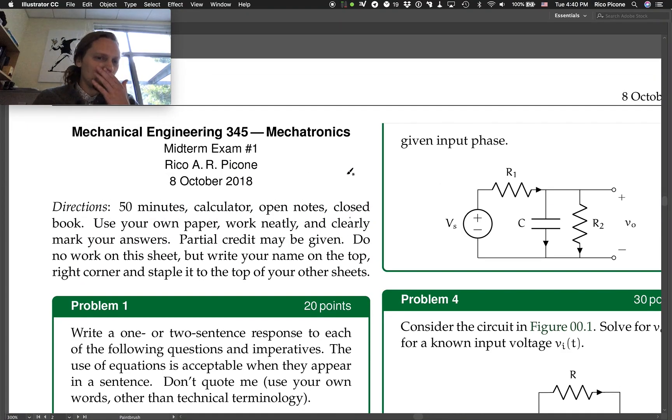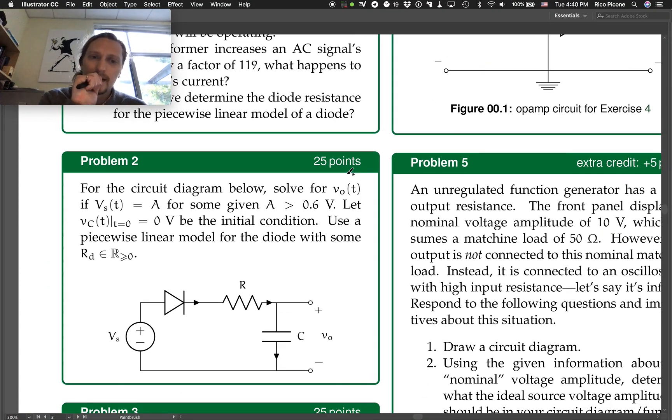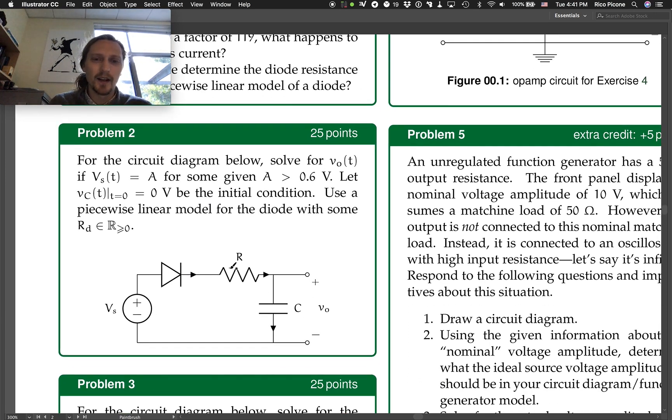Okay, so problem two of the midterm exam. We had a circuit diagram below, so it's an RC circuit with a diode in it, which was maybe a bit of a surprise, but fortunately it's not so bad. It's a relatively easy diode circuit to analyze. So let the initial voltage of the capacitor be zero.